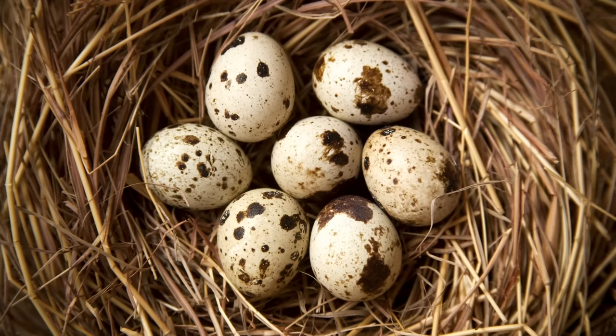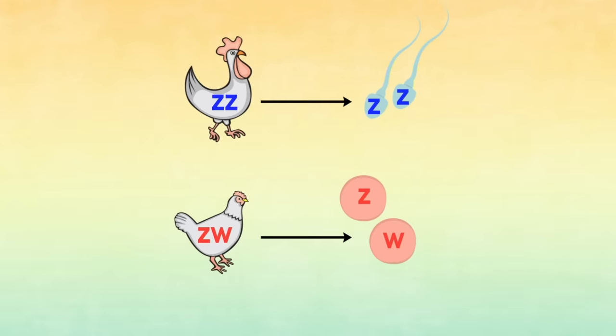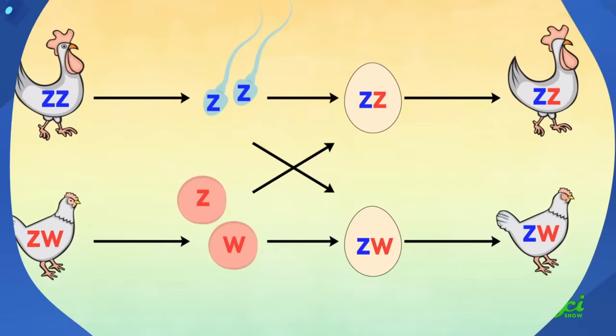But this is nowhere near the only way this plays out. The sex chromosomes of some birds and some reptiles work the opposite way — in their system, it's usually the egg that calls the shots. In these species, males have a pair of Z sex chromosomes, so their sperm all have one large Z. Meanwhile, females have one Z plus a smaller W sex chromosome, so eggs can carry one or the other.